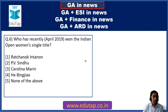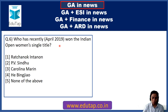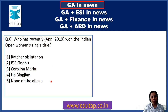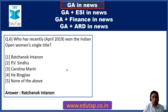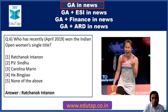Question 6: Who has recently won the Indian Open women's singles title in April? The options — Ratchanok Intanon, PV Sindhu, Carolina Marin, He Bingjiao, or none of the above — are all related to badminton. The answer is Ratchanok Intanon. She has won the Indian Open women's singles title for 2019.